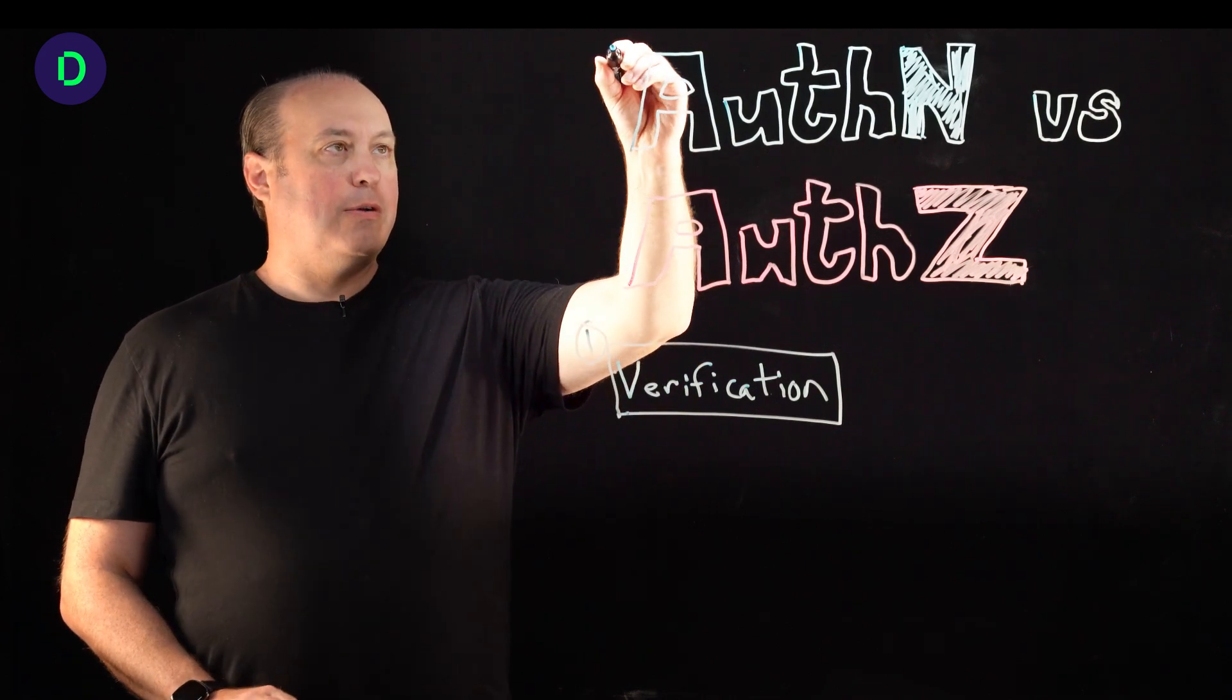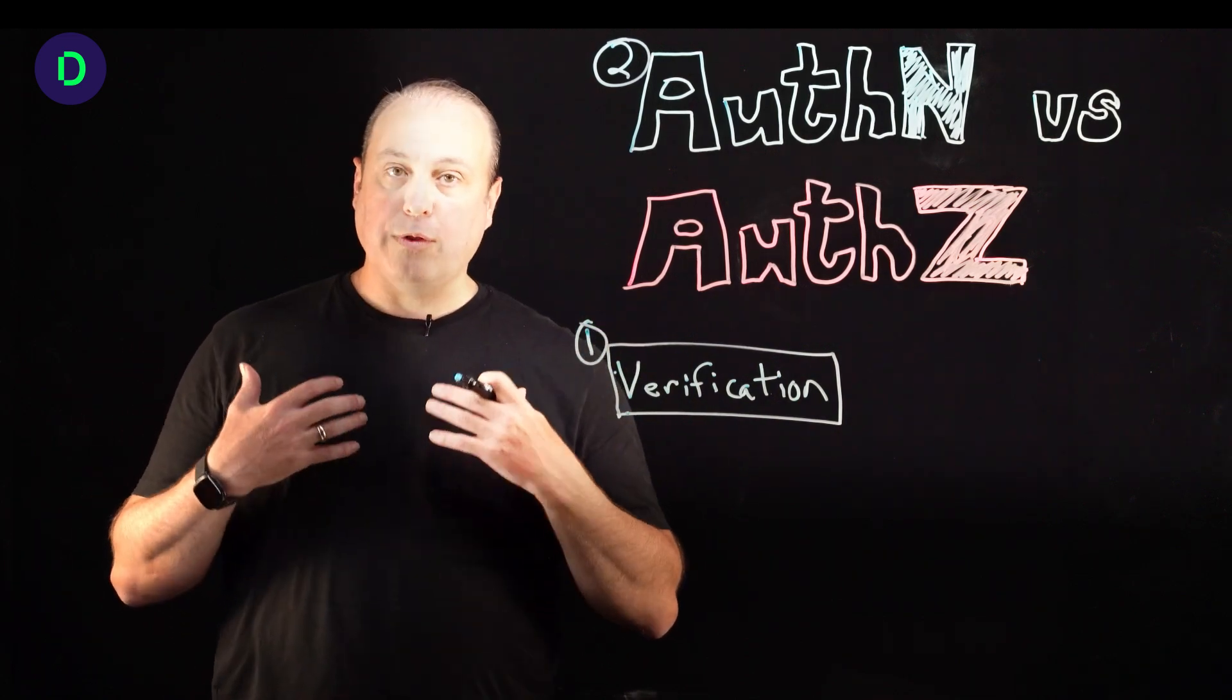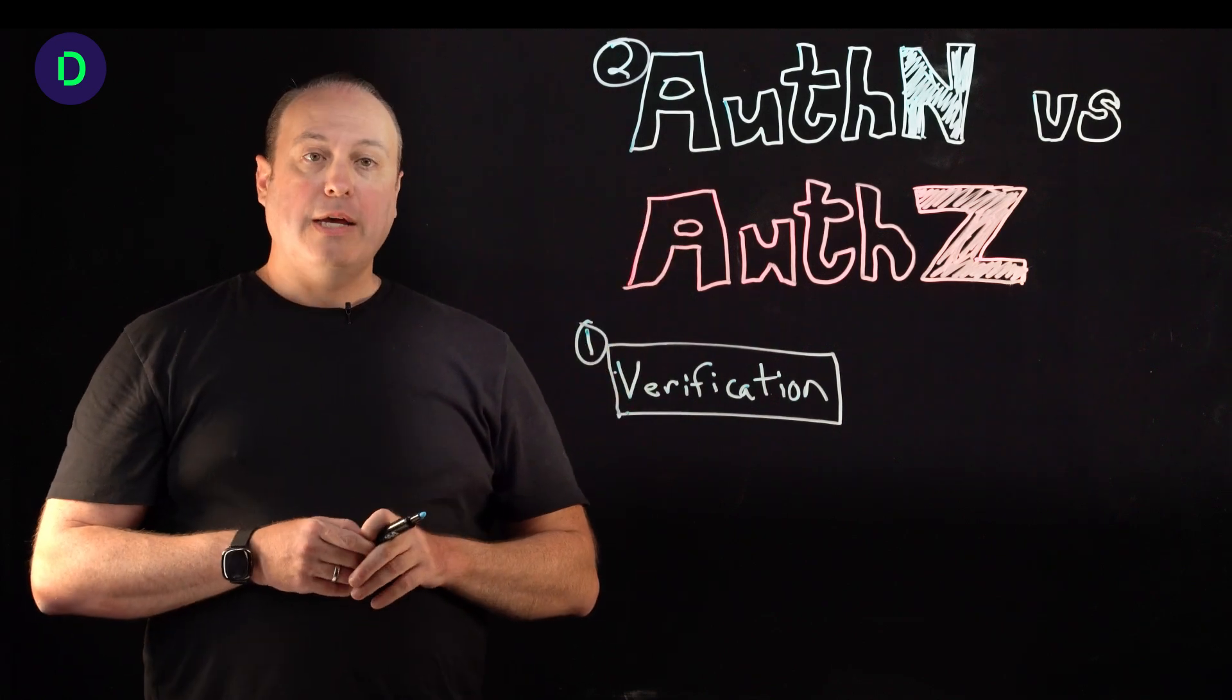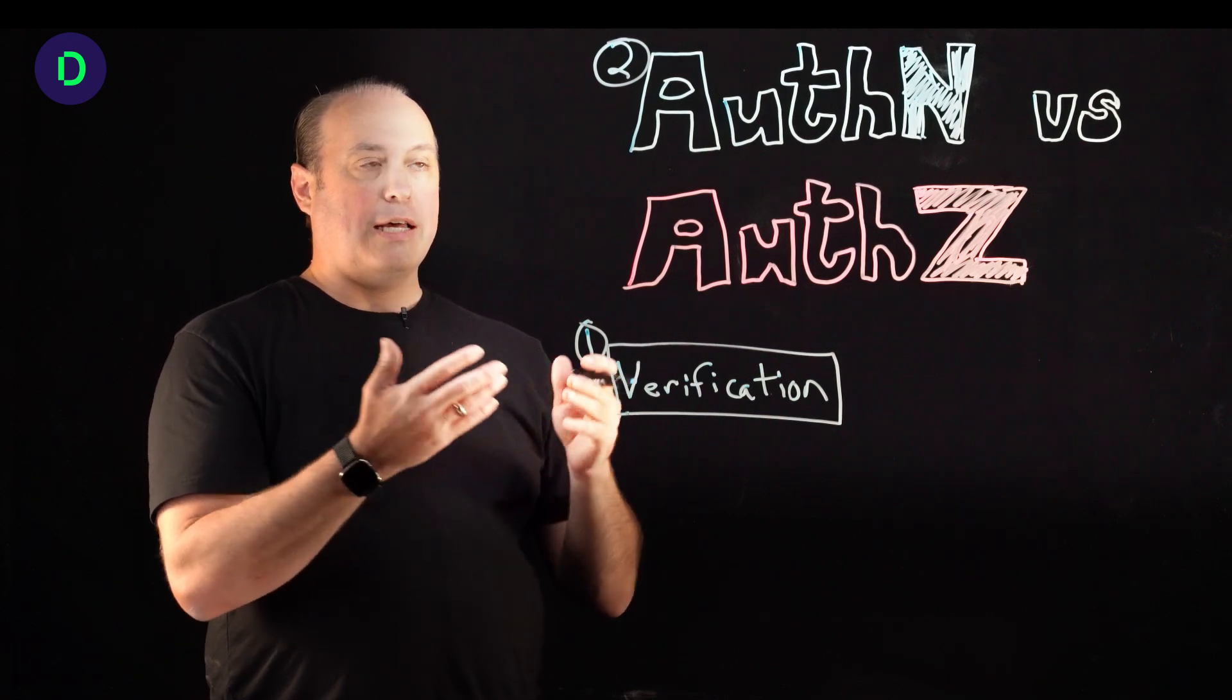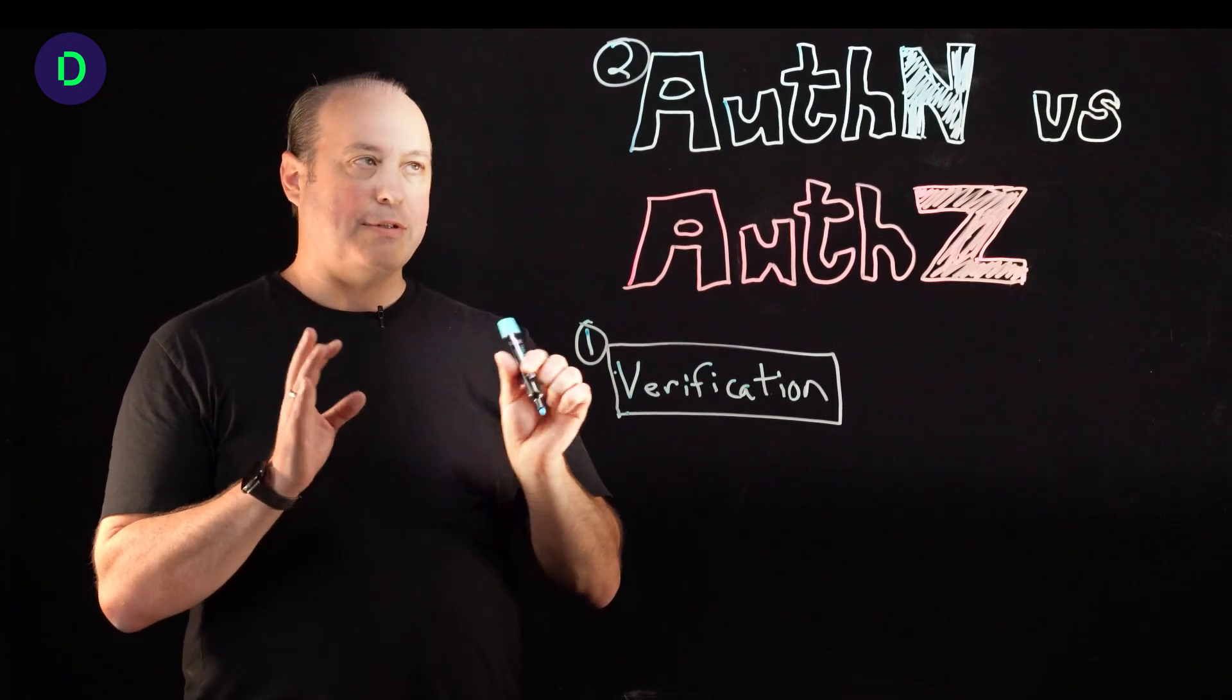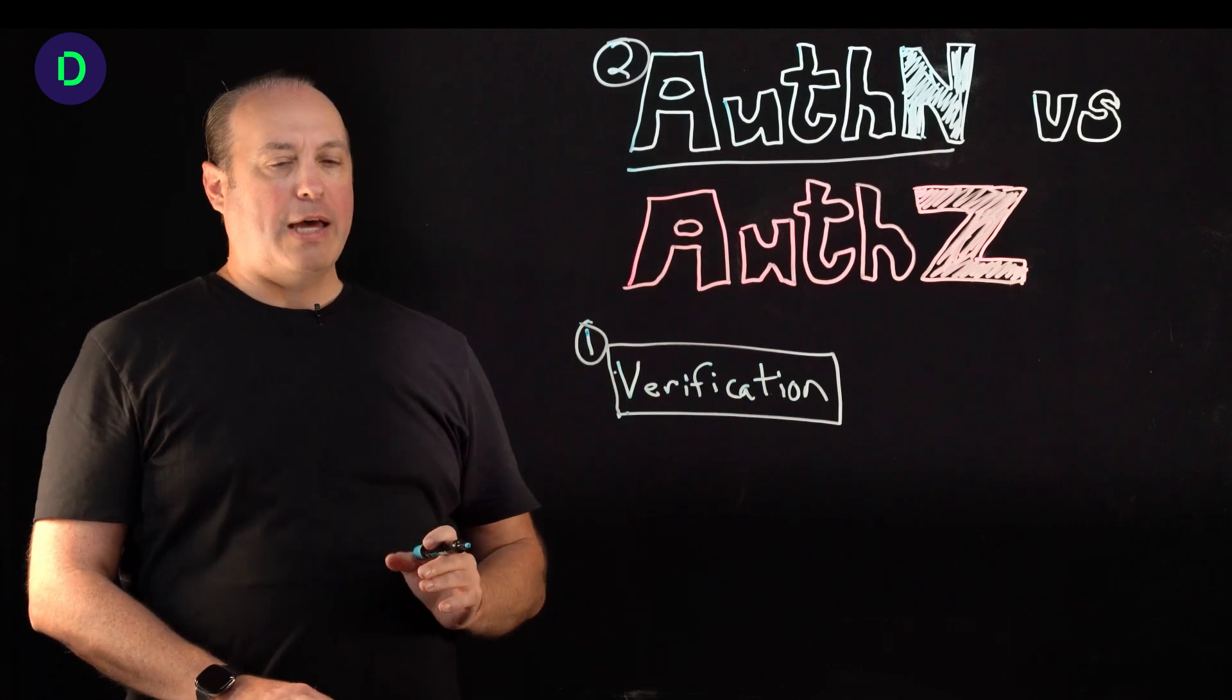And now let's talk about what happens now that that human or that machine has been verified. We know that this is Jeff Carpenter. He has been verified. Now what? Now he is enrolled into the organization and he's given a set of entitlements, allowing them to get out to the network, to the email, to the shared drives, et cetera. But before he does that, he needs to authenticate. And that's what we mean by authentication.